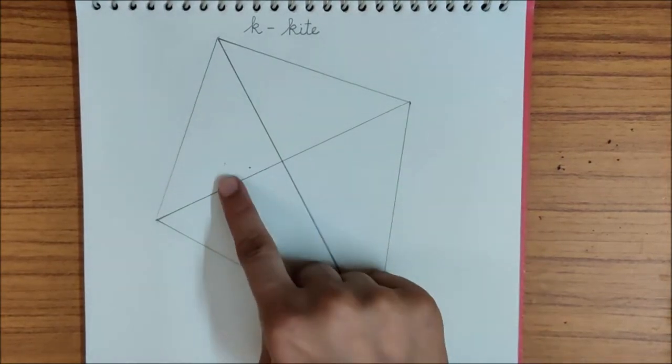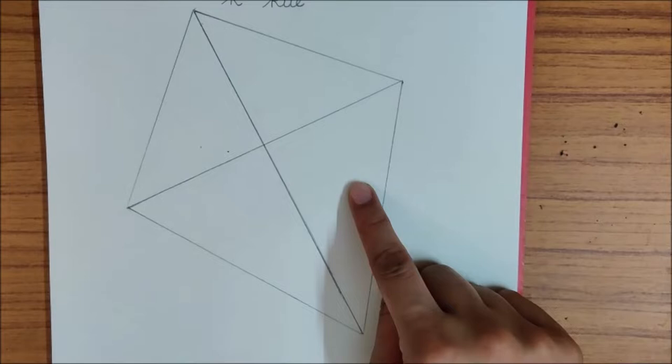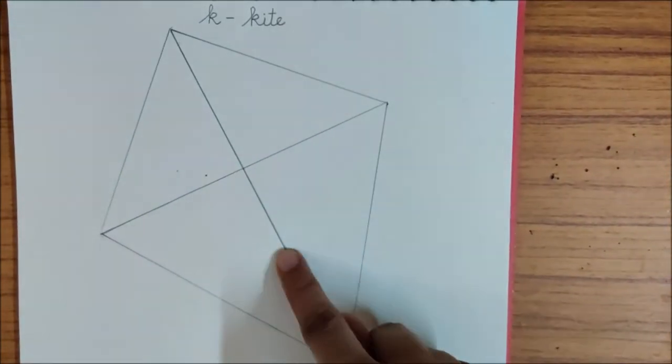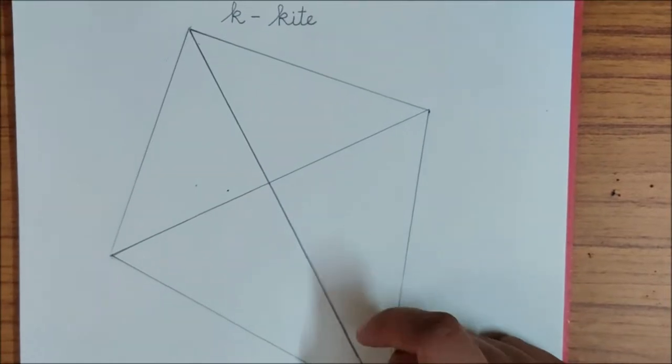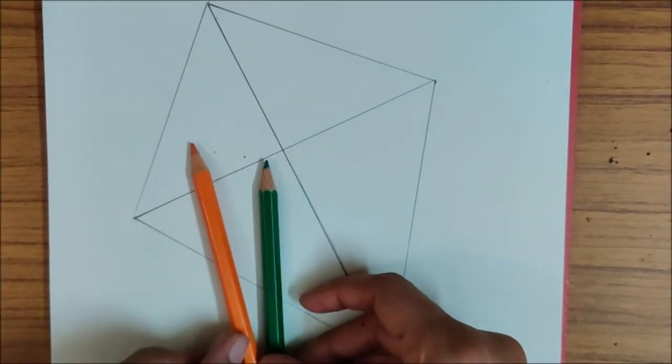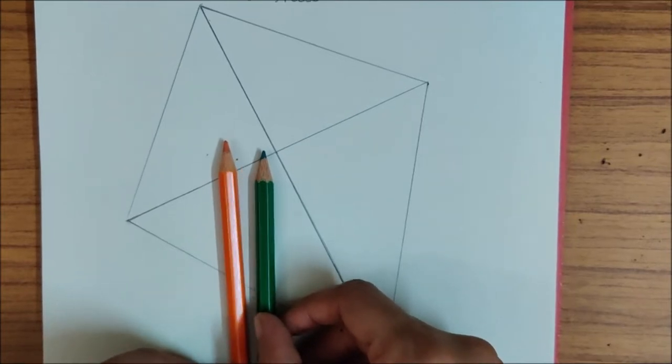In this kite, there are 4 boxes: 1, 2, 3 and 4. In these boxes, I will make different patterns with these colors. These are the colors of our Indian flag.